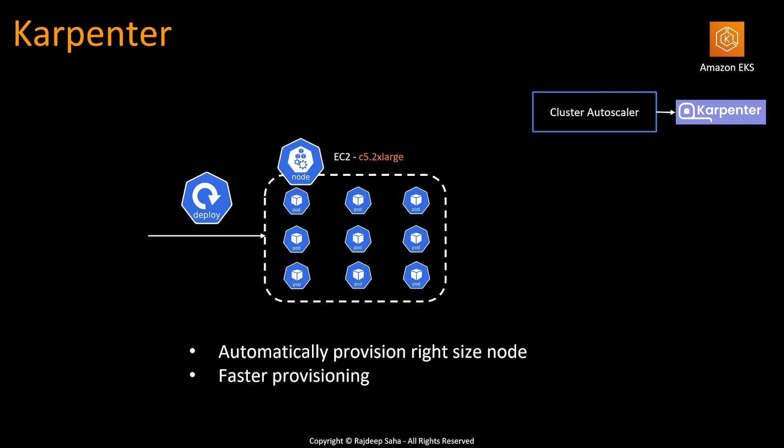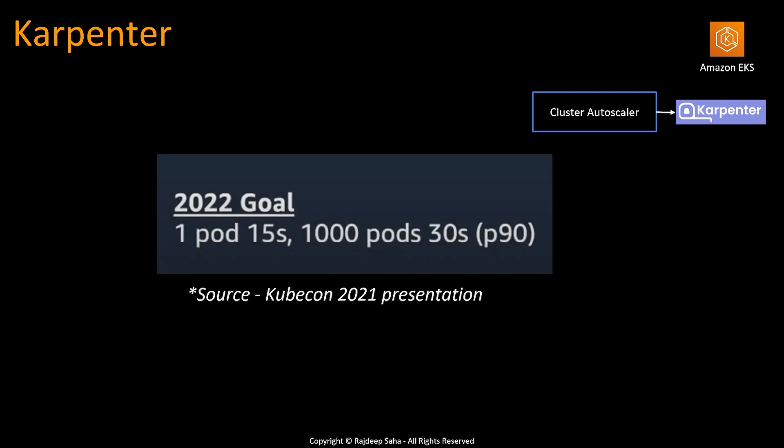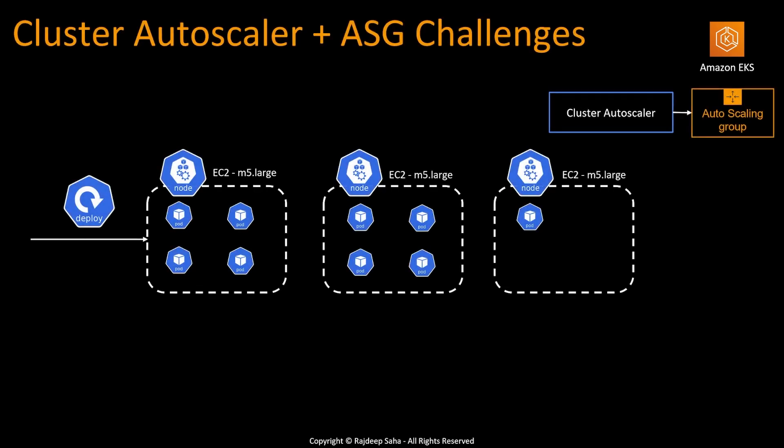Since Karpenter is not provisioning multiple EC2s, it is faster. In general, Karpenter should be faster than a traditional autoscaling group. Referring to a KubeCon 2021 presentation, next year's goal for Karpenter is: one pod getting scheduled should be done in 15 seconds, and 1,000 pods getting scheduled should be within 30 seconds. That's pretty fast.